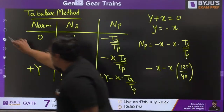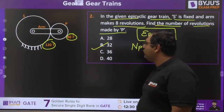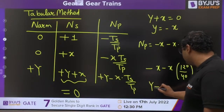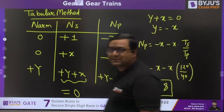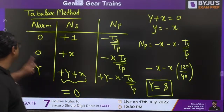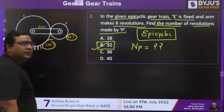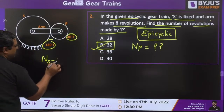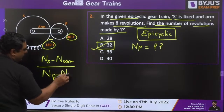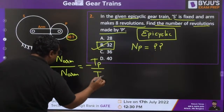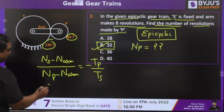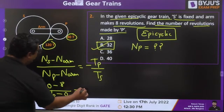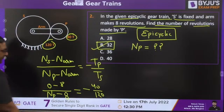Sun teeth = 120, planet teeth = 40. The arm R makes 8 revolutions, so y = 8. Since y = −x, x = −8. Speed of planet P = y − x·(tS/tP) = 8 − (−8)×(120/40) = 8 + 24 = 32 RPM. Answer is B — 32 RPM. You can also apply the relative velocity approach: (nS − nArm)/(nP − nArm) = −tP/tS, giving the same result.